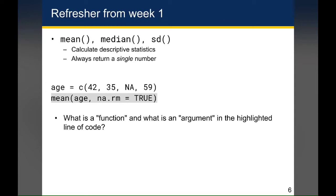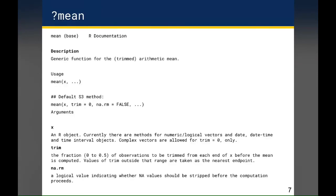Let's take a look at the help function for mean in more detail. The name of the function is usually on the top left when you load R documentation for any function or object. In this case, mean is the name of the function, and the description says mean is the generic function to calculate the arithmetic mean. If you look at the list of arguments just below where usage is defined, you'll see there are three arguments: the first is x, the second is trim, and the third is na.rm.